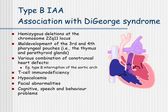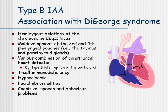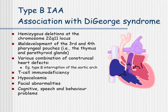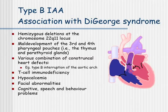Especially type B, but also other types of interrupted aortic arch, can be associated with DiGeorge syndrome, which is a hemizygous deletion at the chromosome 22q11 locus, leading to maldevelopment of the thymus and parathyroid glands. There are various combinations of conotruncal heart defects, especially with type B interruption. T-cell immunodeficiency, hypercalcemia, facial abnormalities, and cognitive, speech, and behavior problems are involved in this syndrome.